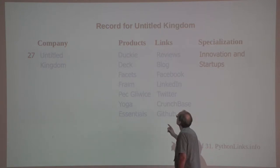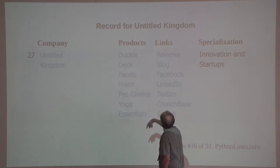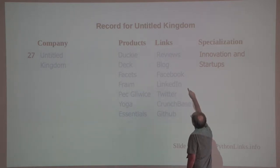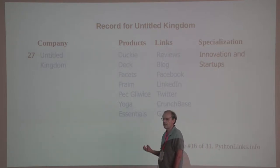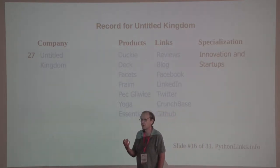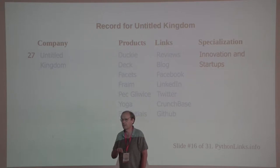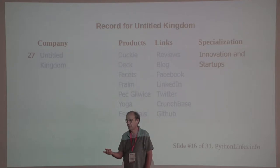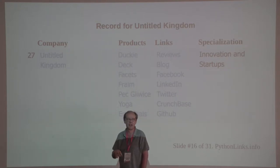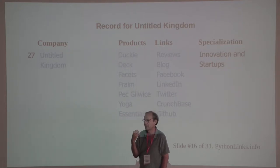Here's the record for a particular company, Untitled Kingdom — they have products, but also links: reviews, a link to their blog, Facebook, LinkedIn, Twitter, Crunchbase, GitHub. The information about a company is no longer on a single website — it's all over the web. And if your company's not here, I invite you to add it; if it is here, I invite you to add all the links for your company.